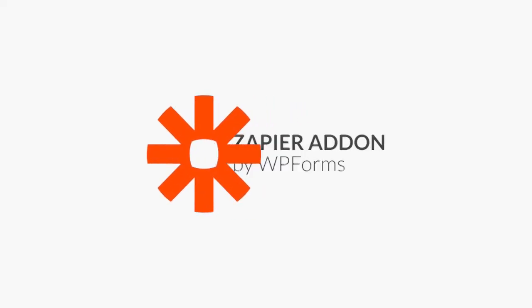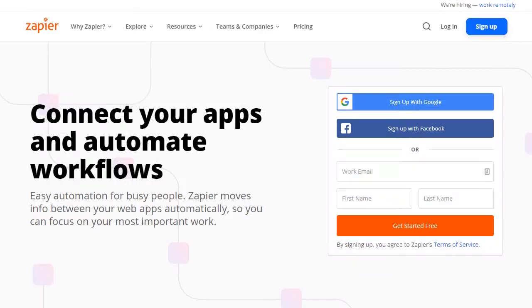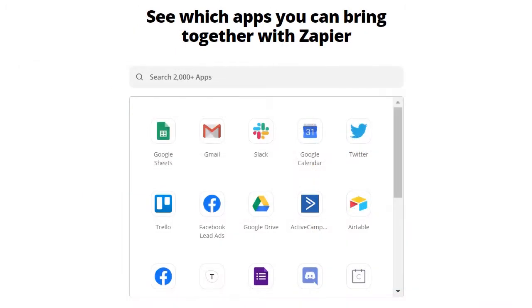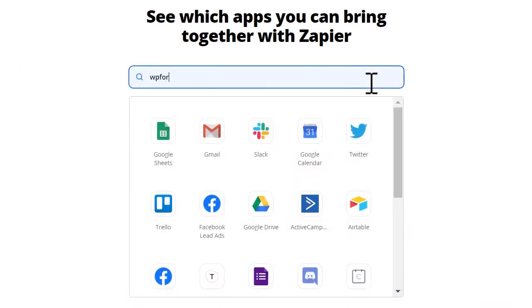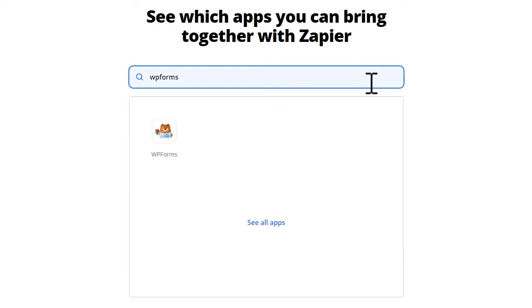But with the Zapier add-on by WPForms, you won't have to. Zapier provides easy automation for busy people. It moves information between your web apps automatically, so you can focus on your most important work. With just a few clicks, you can quickly connect different web applications, including WPForms, to one another, saving valuable time from your day.